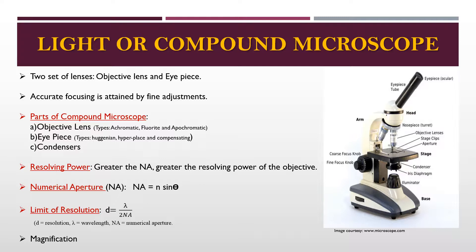The limit of resolution is defined as the smallest distance between two separate objects that can be distinguished as two separate objects. Greater resolution in a light microscope is obtained with the shortest wavelength of visible light and an objective with maximum numerical aperture. The formula is: Resolution = wavelength / (2 × NA). Magnification of the microscope is the increase in size of the object, and magnification beyond resolving power has no value.